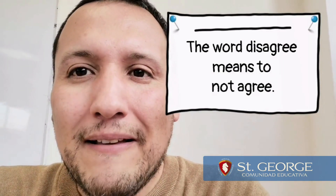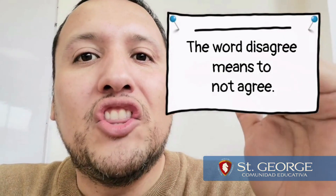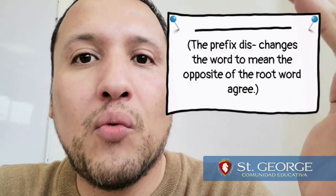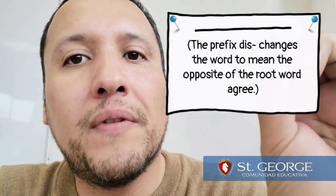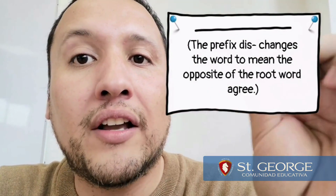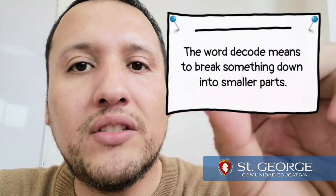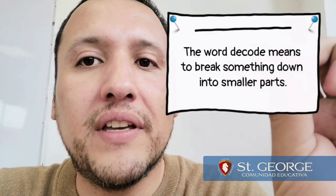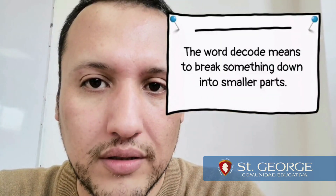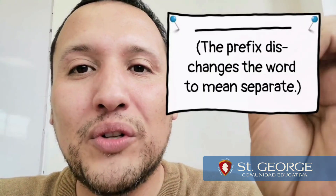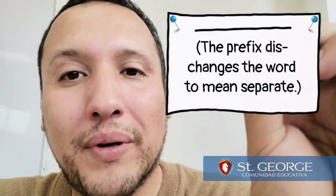Examples. The word 'disagree' means 'not agree' — the prefix 'dis' changes the word to mean the opposite of the root word 'agree.' The word 'decode' means to break something down into smaller parts; the prefix 'de' changes the word to mean 'separate.'